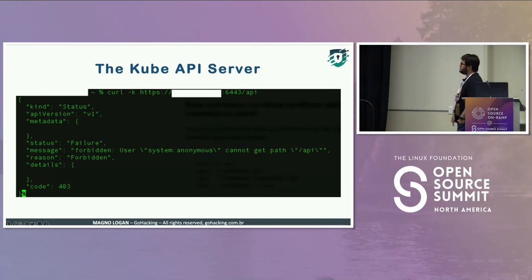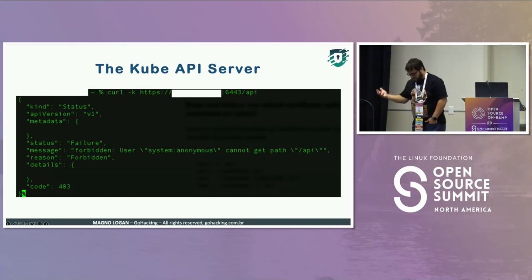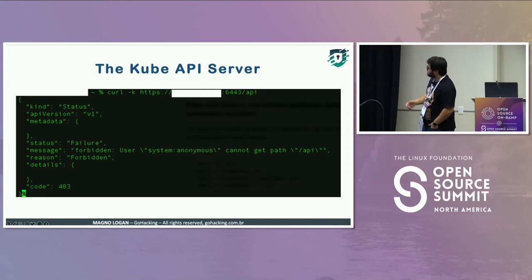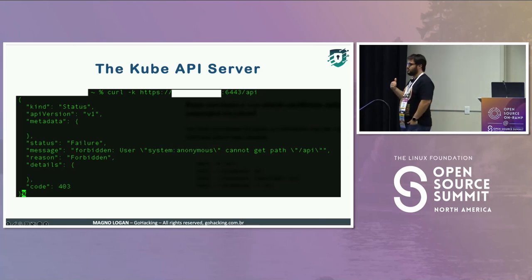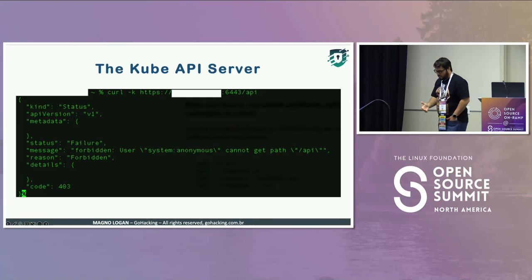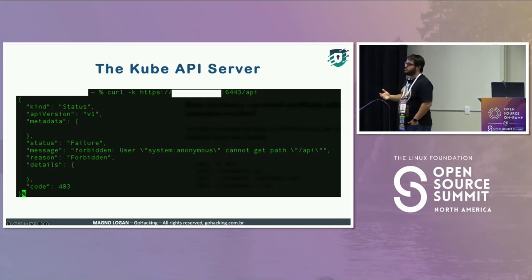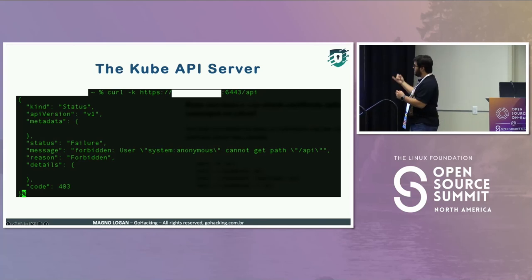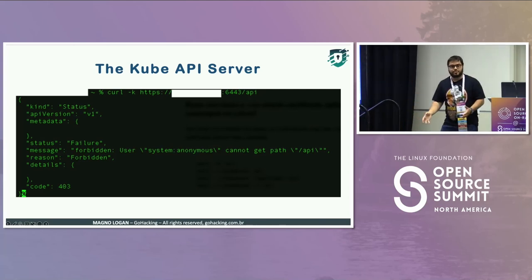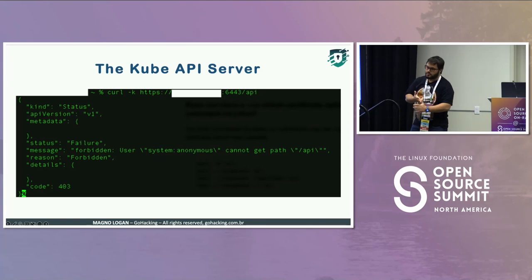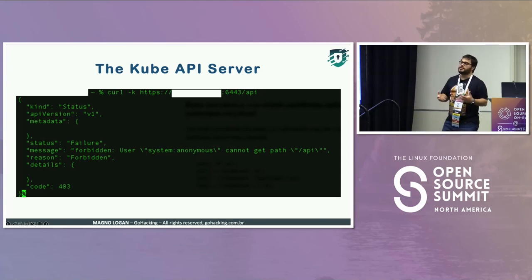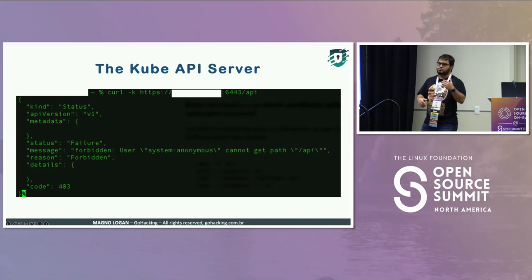The Kube API server is basically a REST API. The idea is that you shouldn't expose it unless you have to, because by exposing it you can give information to attackers. For example, if you reach out to the /version endpoint, you can get the Kubernetes version, the Golang version, and everything. That information can be very valuable for an attacker trying to exploit your cluster.